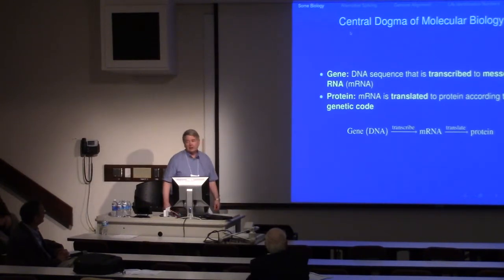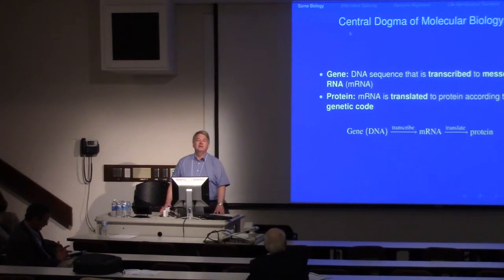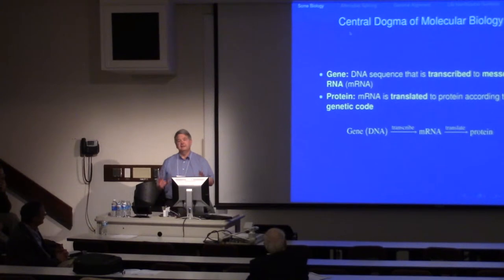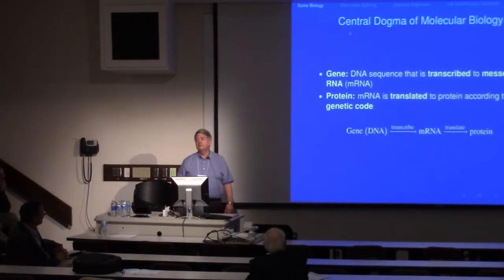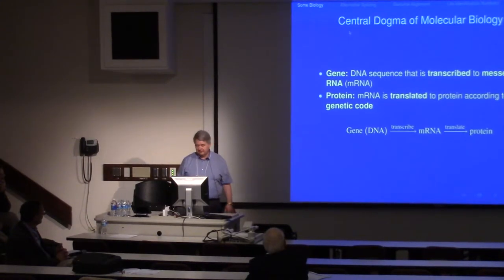If you look at the central dogma, it tells you to look at three kinds of molecules in the cell. One is the DNA, which carries the genes. The genes can be transcribed, or copied basically, into messenger RNA, and then messenger RNA is translated into protein, which does various jobs in the cell.